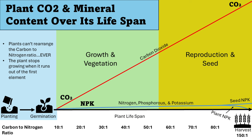And here's the problem: your plant cannot rearrange its carbon to nitrogen ratio to accommodate minerals that are not there. So when your plant doesn't have enough carbon dioxide, it is not going to take up more nitrogen, phosphorus, and potassium, or sulfur, until it gets more carbon dioxide.